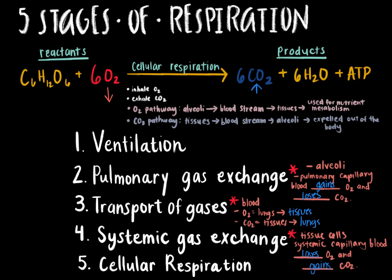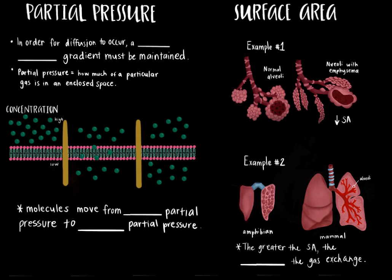In this video, we will be going over stages two, three, and four. To better understand the gas exchange process, we must first review the concept of a partial pressure gradient. In order for diffusion of gases to occur, a partial pressure gradient must be maintained.